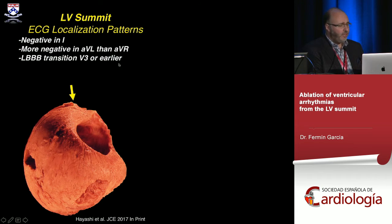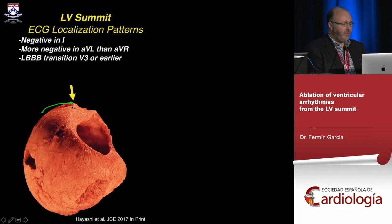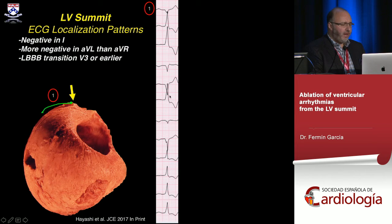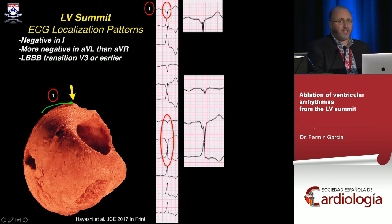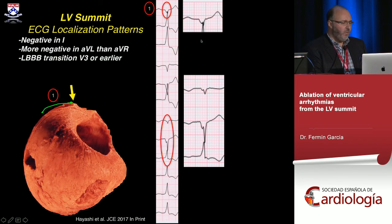They can transition as early as V2 or V1, making them right bundle branch block. The classic pattern for the down slope of the LV summit is an outflow tract arrhythmia — negative in lead I, more negative in AVL than AVR. This shows a QS pattern in V1, QS in lead I, and a QS in V2 deeper than V1, with a sudden transition to positive in V3 — fitting all epicardial criteria.